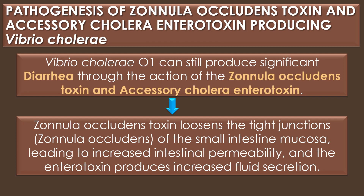Pathogenesis of zonula occludens toxin and accessory cholera enterotoxin-producing Vibrio cholerae: In the absence of cholera toxin, Vibrio cholerae O1 can still produce significant diarrhea through the action of zonula occludens toxin and accessory cholera enterotoxin. As the name implies, the zonula occludens toxin loosens the tight junctions of the zonula occludens of the small intestine mucosa, leading to increased intestinal permeability, and the enterotoxin produces increased fluid secretion.